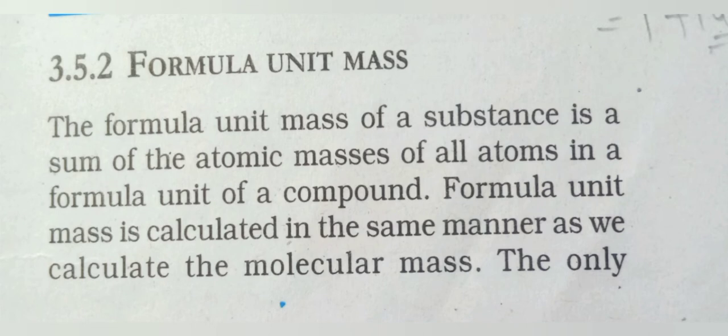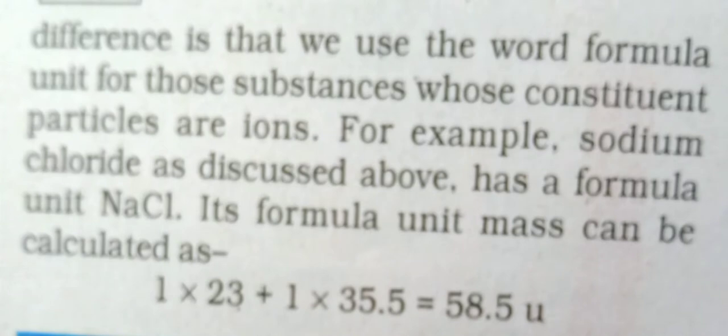Formula unit mass is calculated in the same manner as we calculate molecular mass. The way we calculate molecular mass, in the same way we have to calculate unit mass also. The only difference is that we use the word formula unit for those substances whose constituent particles are ions. The difference is that we only use the name of those substances in the formula that have ions. For example, sodium chloride as discussed above has a formula unit NaCl. Its formula unit mass can be calculated as 1 times 23 plus 1 times 35.5 equals 58.5 u. In the ratio we took NaCl, Na is 23 and Cl is 35.5.